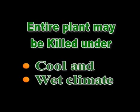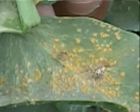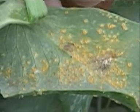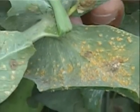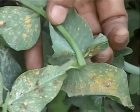Under cool and wet climate in Northern India, the entire plant may be killed. The earliest symptoms of this disease are yellow spots in round or elongated clusters. Afterwards, pustules develop which are powdery and orange-brown in appearance.